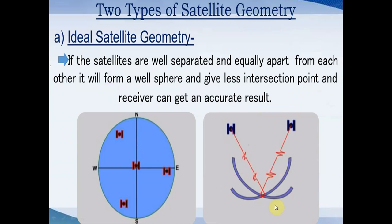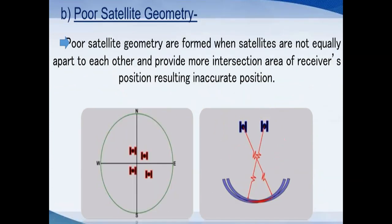Ideal satellite geometry: suppose an object is monitored by satellites. If the satellites are well separated and equally apart from each other, they will form a well-spread geometry, give less intersection area, and the receiver can get an accurate result. In the case of poor satellite geometry, satellites are not equally apart from each other and provide more intersection area, leading to less accurate positioning.